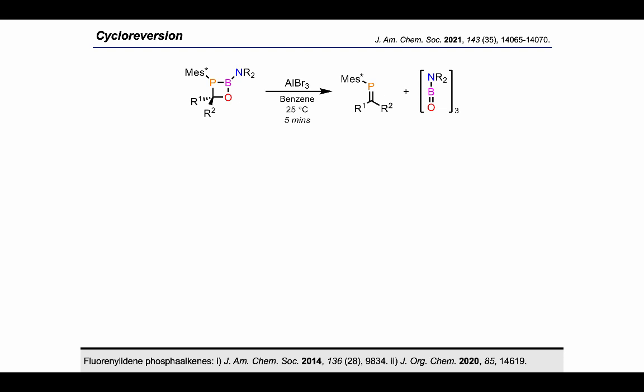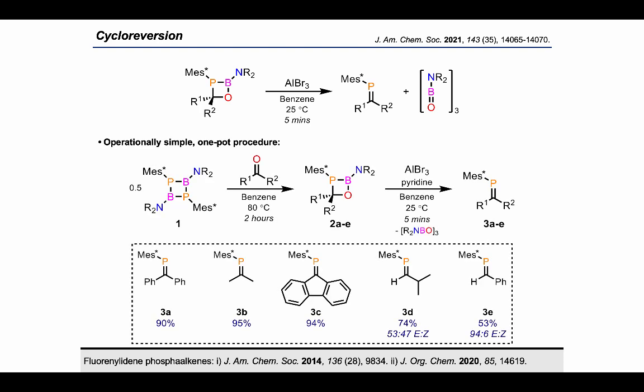If however we add one equivalent of aluminum tribromide, we see clean and immediate conversion into the corresponding phosphoralkene. The boron containing byproduct was identified as aminoboryl oxide trimer by NMR spectroscopy and mass spectrometry. With the addition of pyridine to sequester the aluminum tribromide, an operationally simple one-pot procedure can be employed to access known and novel phosphoralkenes in good to excellent yields.